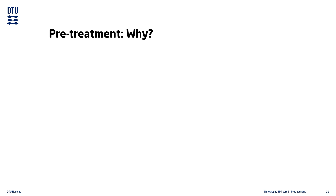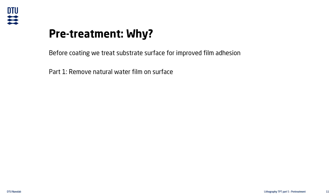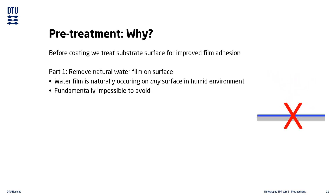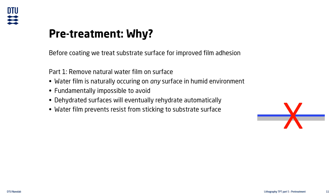After selecting an appropriate substrate, we need to prepare it before the resist coating. This pre-treatment, or priming, is a process intended to improve the adhesion of the resist to the surface of the substrate. There are two main problems with resist adhesion. The first is water. A thin water film forms naturally on any surface in a humid environment, unless that surface has a mechanism to avoid it. It is fundamentally impossible to avoid the formation of this water film — even if we find a good method for dehydrating our substrate and leave it out in ambient atmosphere, it will automatically rehydrate in just a few minutes. The problem is that this water film prevents the resist from adhering properly to the surface, often seen as film delamination from the substrate's surface.